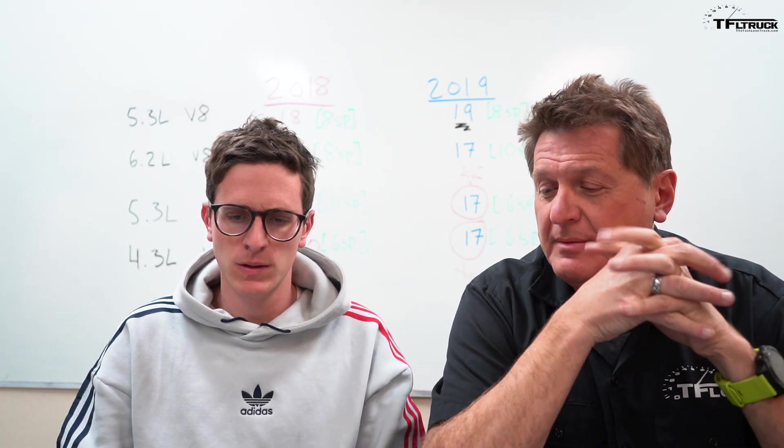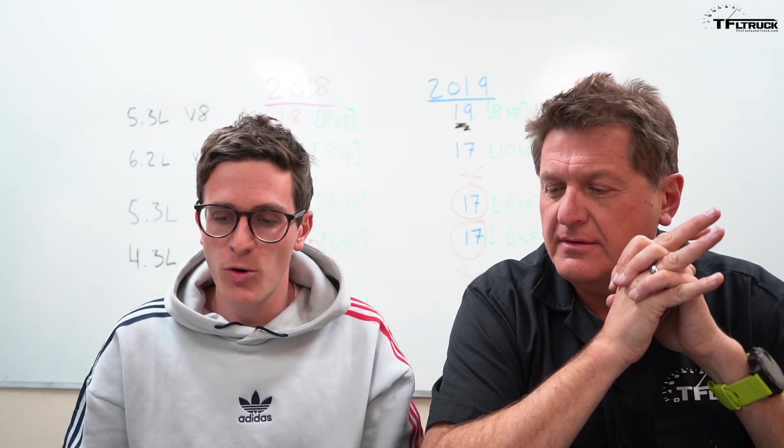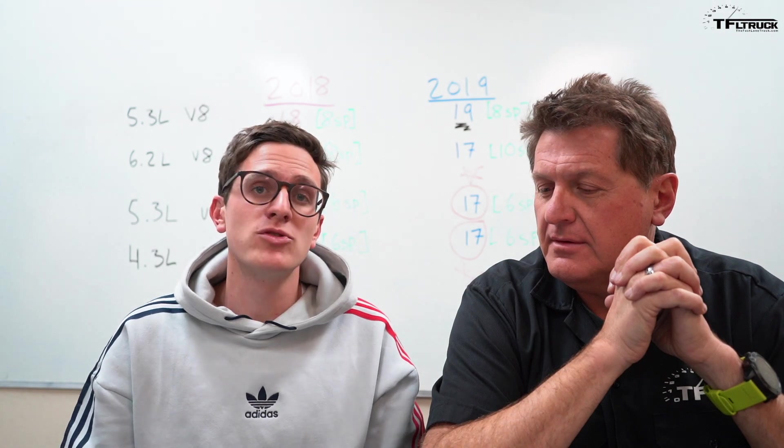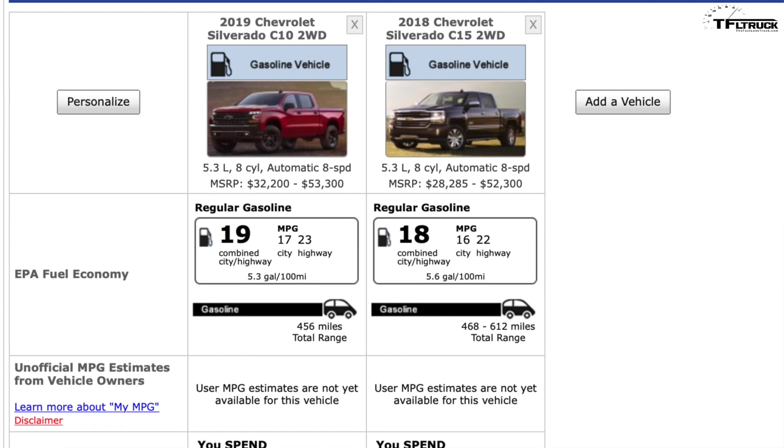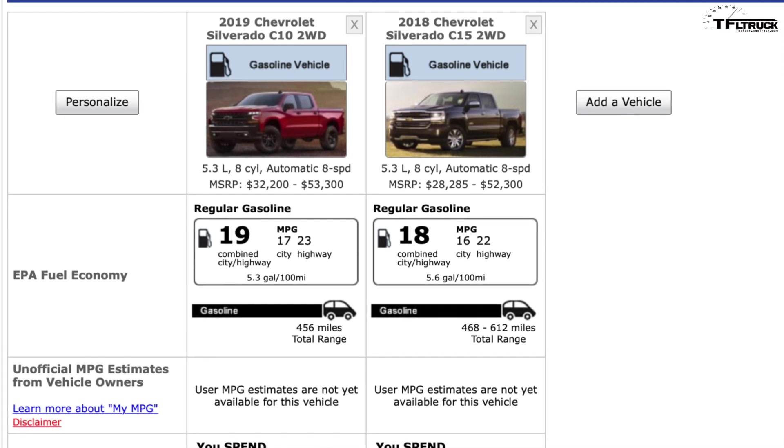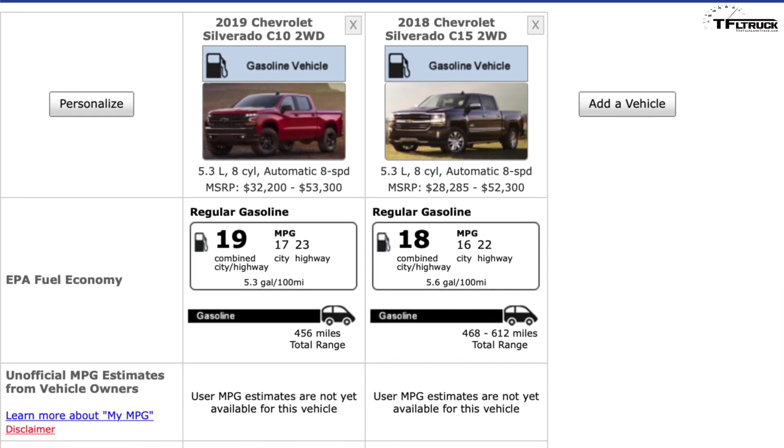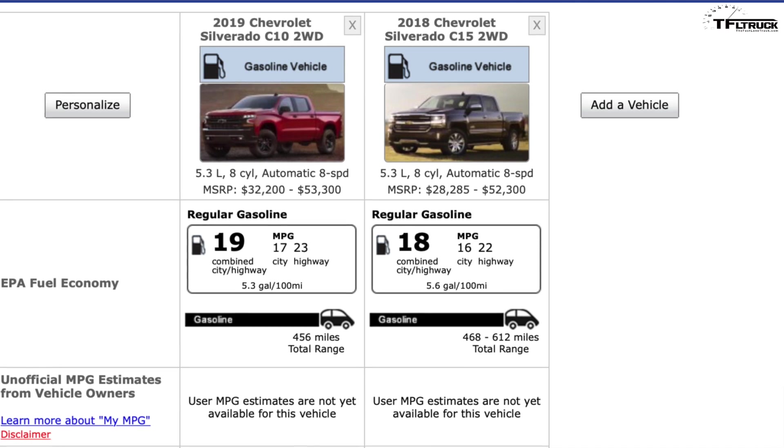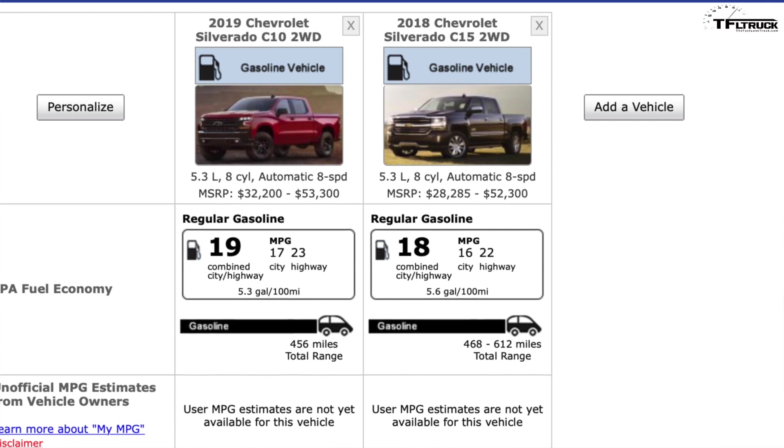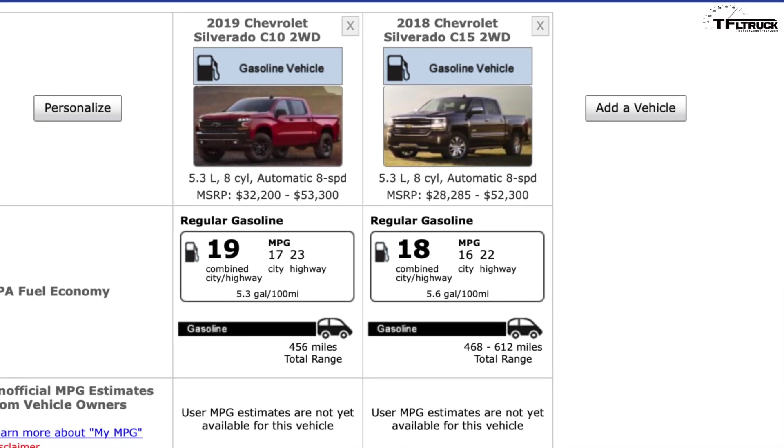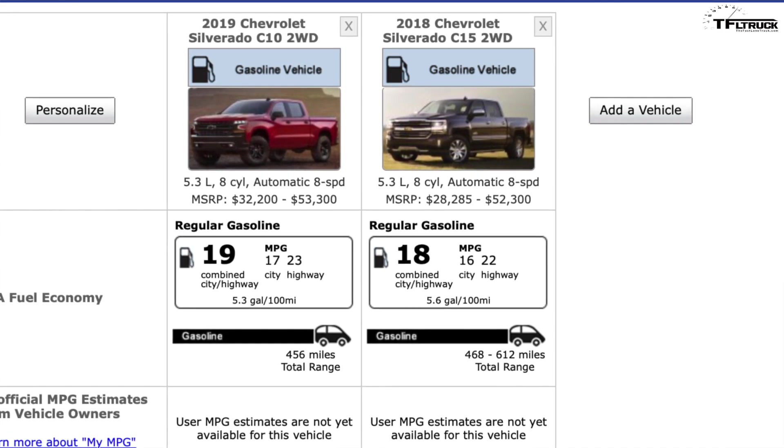The first configuration we looked at was the 5.3 liter V8, and both trucks configured with the 8-speed automatic. The old 2018 truck with the 8-speed had active fuel management. The new 2019 truck with the V8 and the 8-speed has dynamic fuel management. Same basic engine, 5.3, different management. We can see with the 8-speed transmission in both, the dynamic fuel management truck, the new one, gets one MPG better combined than the old truck.